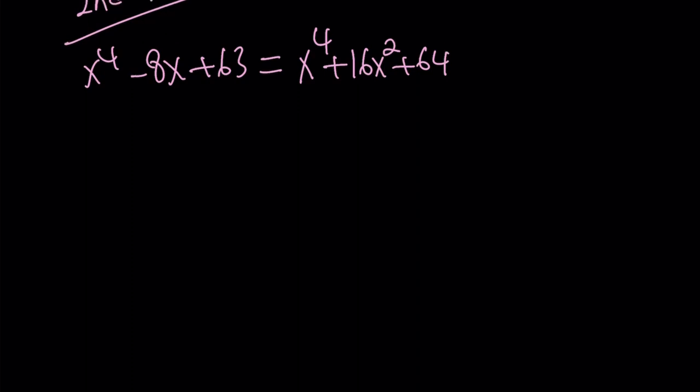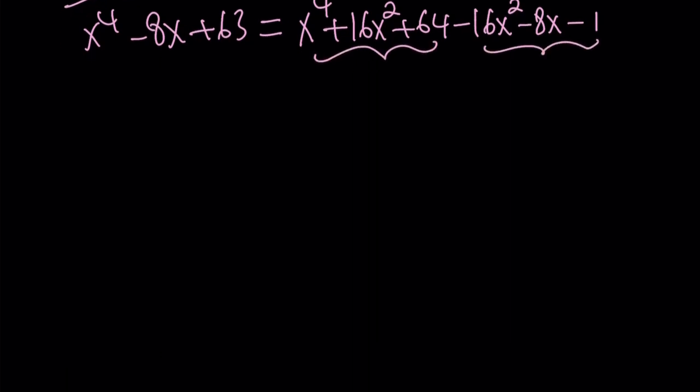This is not very easy to see, but you can do it after some practice. So I'm going to subtract 16x squared because there's no x squared in the original equation. And I also need to subtract 8x because I have a negative 8x. And of course, to get 63, I need to subtract 1. And guess what? Both of these become perfect squares.